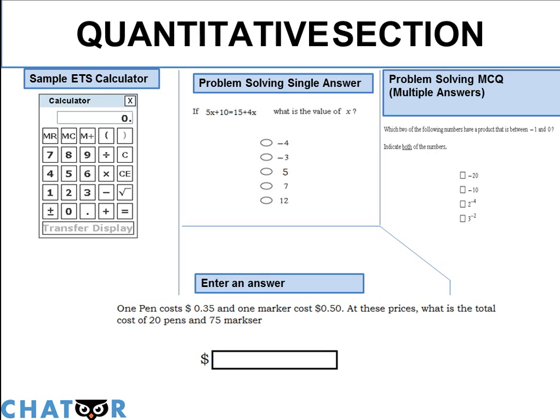Now the multiple answer bit, on the other hand, to your right you will see problem-solving MCQ multiple answer. When it has multiple answers, you will see a square box next to the answer choice. So that means it could have one or more answers.